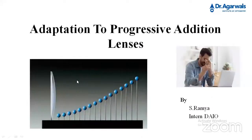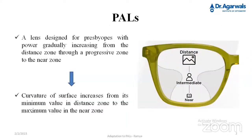Good afternoon everyone. Today I'm going to talk about adaptation to progressive addition lenses. A progressive lens is designed for presbyopes with the power gradually increasing from the distant zone through the progressive zone to the near zone. The curvature of the surface increases from its minimum value in the distance zone to the maximum value in the near zone.